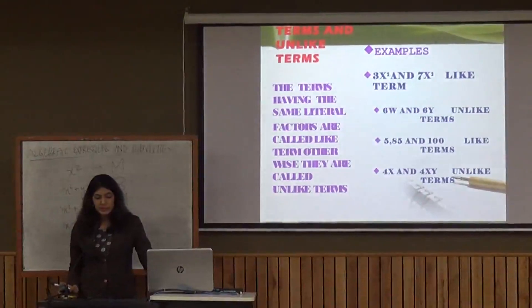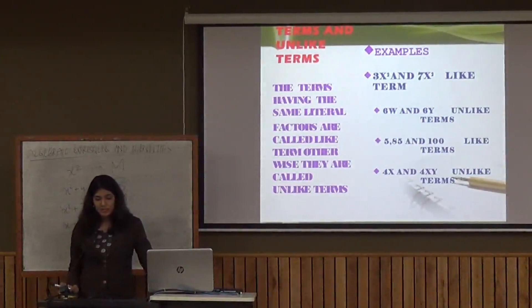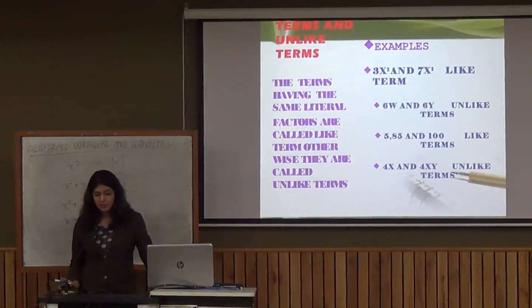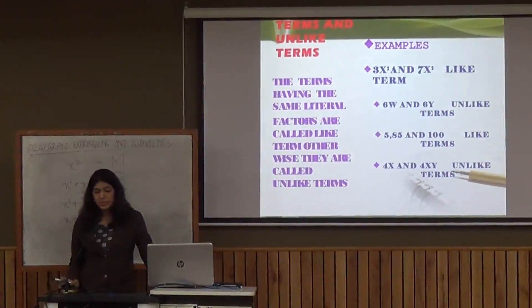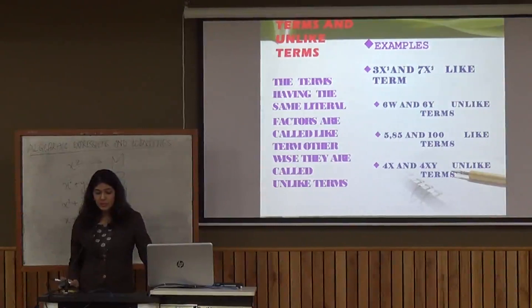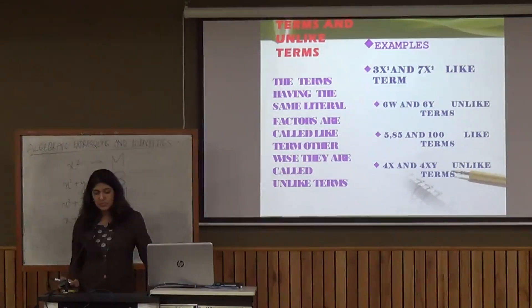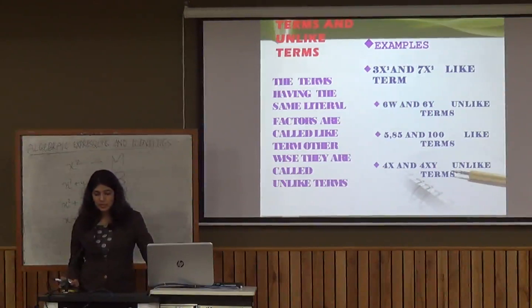Now let's see like terms and unlike terms. Terms having the same factors are called like terms; otherwise they are called unlike terms. For example, 3x square and 7x square are like terms. 6w and 6y are unlike terms. 585 and 100 are like terms. 4x and 4xy are unlike terms — we cannot add 4x and 4xy together. But 3x square and 7x square can be added or subtracted.